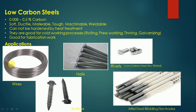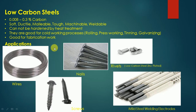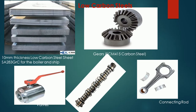Due to their ductility, low carbon steels can be drawn into wires, formed into nails, screws, rivets, and welding rods such as low carbon zinc-plated mild steel welding rods. Cold working is a distinctive characteristic of low carbon steel, as seen in applications like HRC sheets.